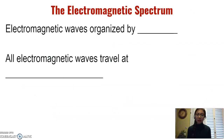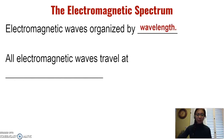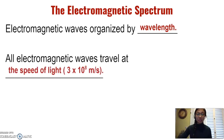Not only are there different ways electromagnetic waves can interact with matter, but there are also many different types of electromagnetic waves. These types are organized by their wavelengths, which impact their frequencies and properties. All electromagnetic waves travel at the same speed — the speed of light, which is 3 × 10⁸ meters per second. Let's look at the different types based on their wavelengths and frequencies.